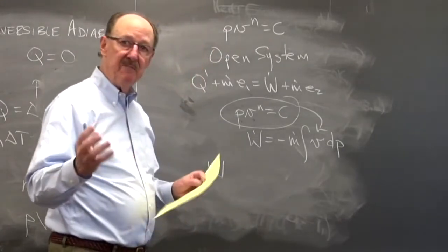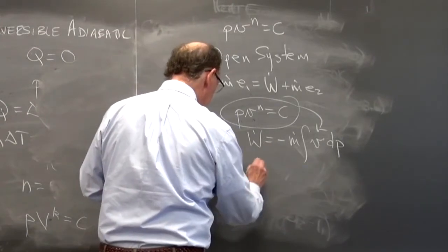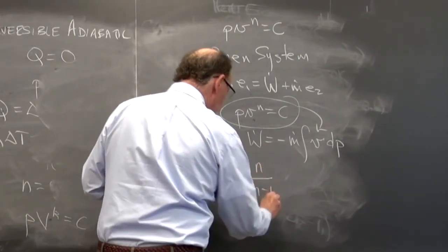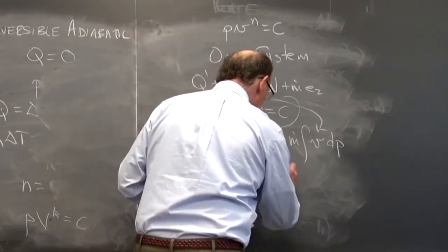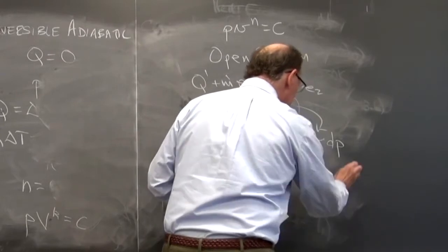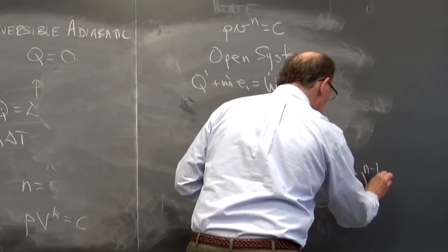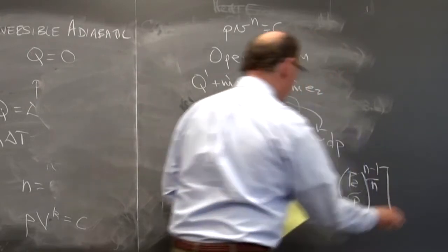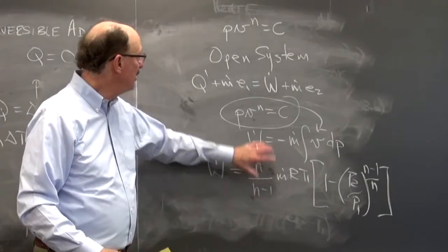Now, the book goes through all the various steps, we're going through one step. So it's N over N minus 1 times M dot RT1 times 1 minus P2 over P1 to the N minus 1 over N. And so this gives us the power.